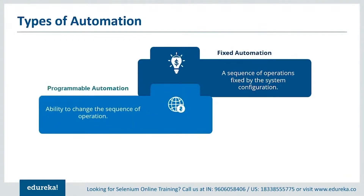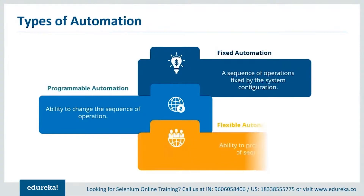Programmable automation can be used to change the sequence of any operation based on the requirements specified by the user. It has made it to the front end of the user interface by providing various options to the user to edit the sequence as per their requirements. Flexible automation can inherit both fixed as well as programmable automation. It has the ability to produce a variety of sequences that are not just limited to one static type of automation.